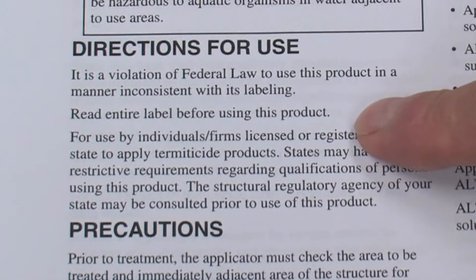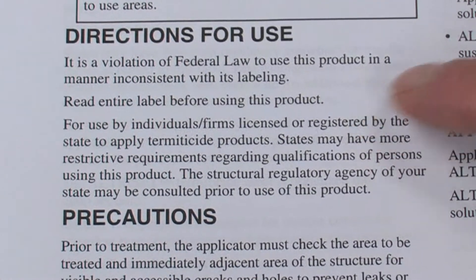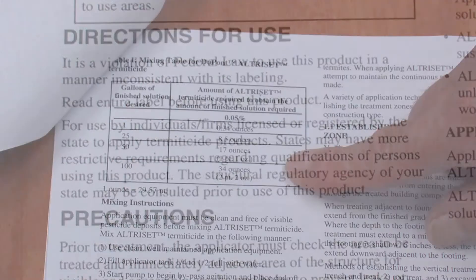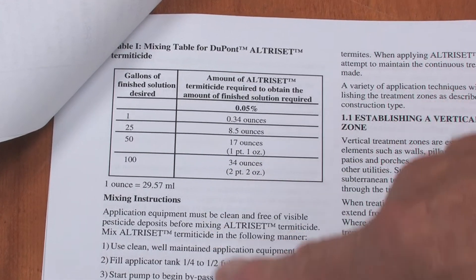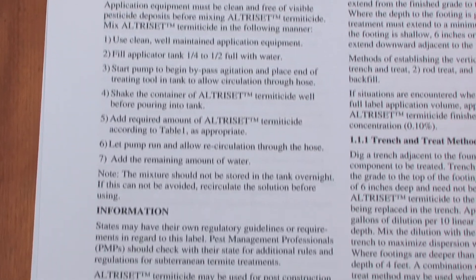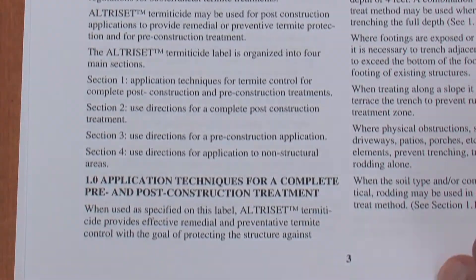Ultraset is going to have directions for use and it will tell you how to measure out the product and apply it effectively for insect control. It has specific measures you can use, like the mixing instructions and where you can put it at the site.